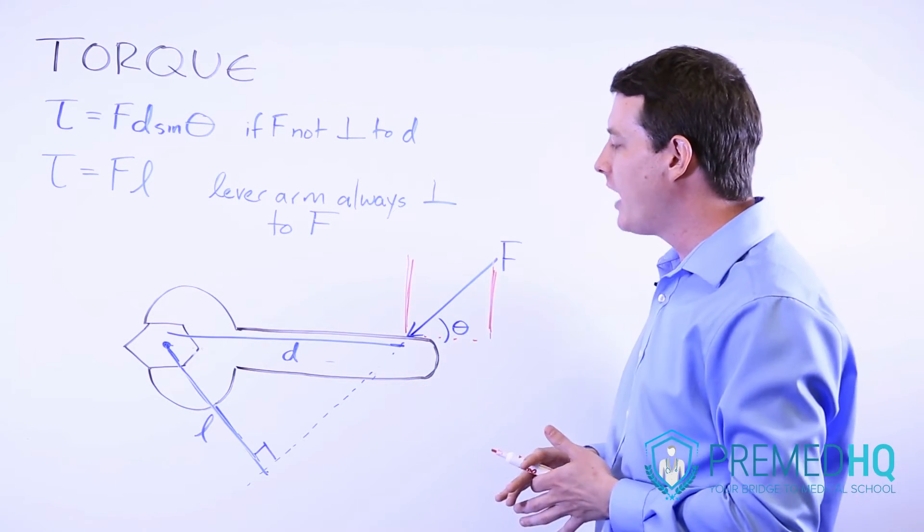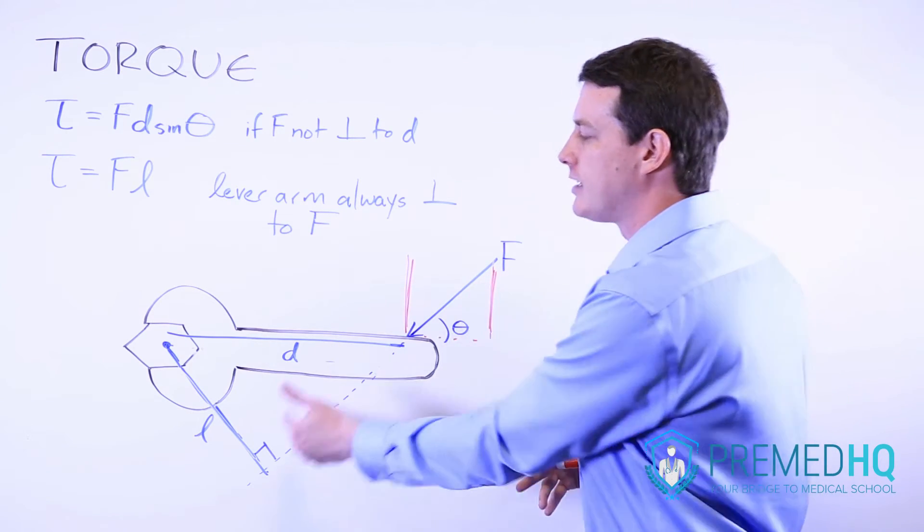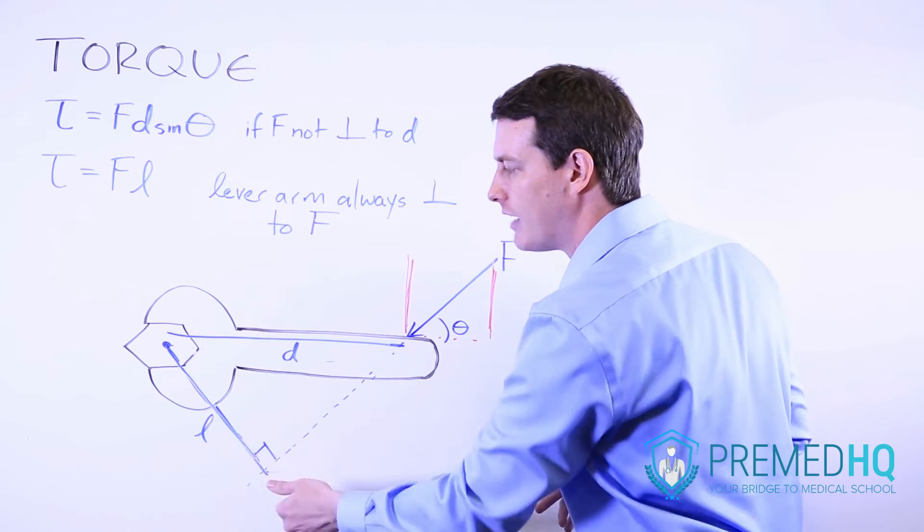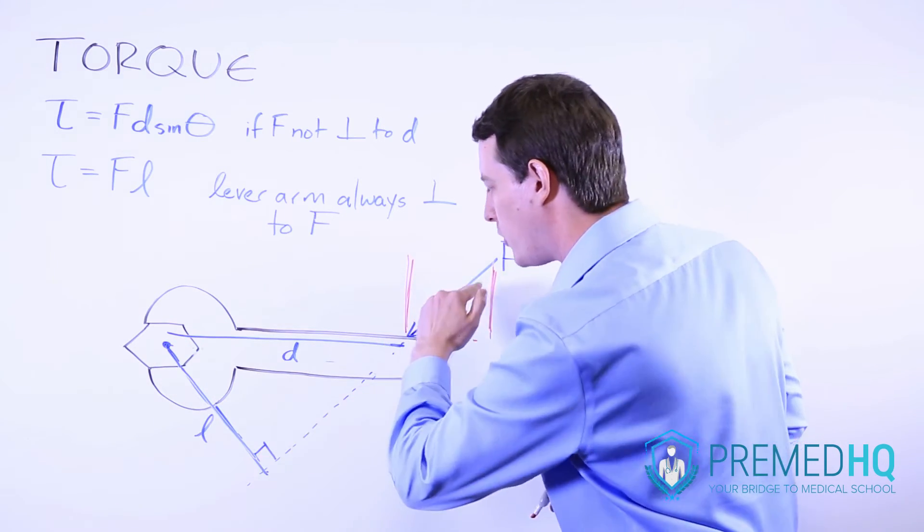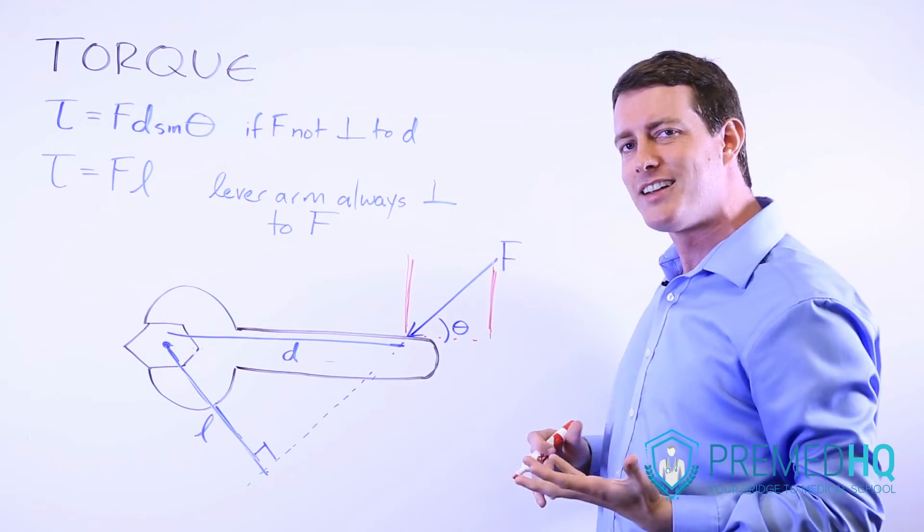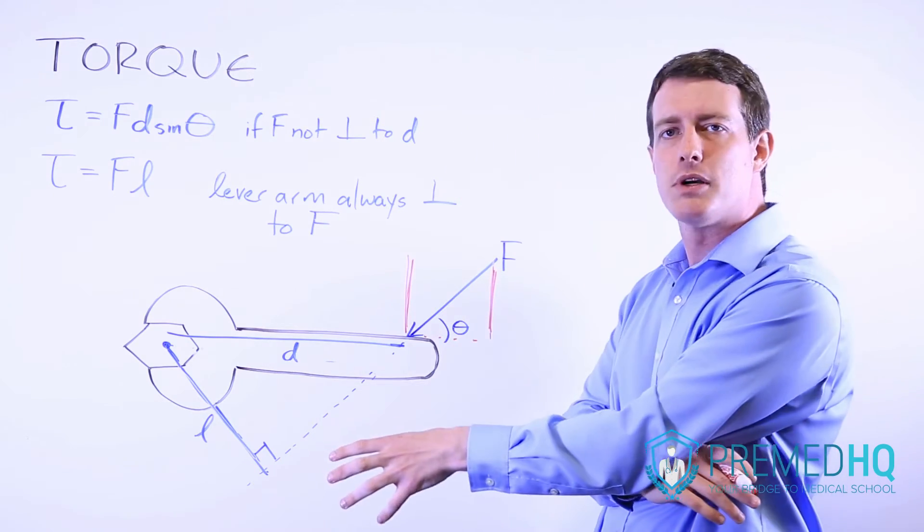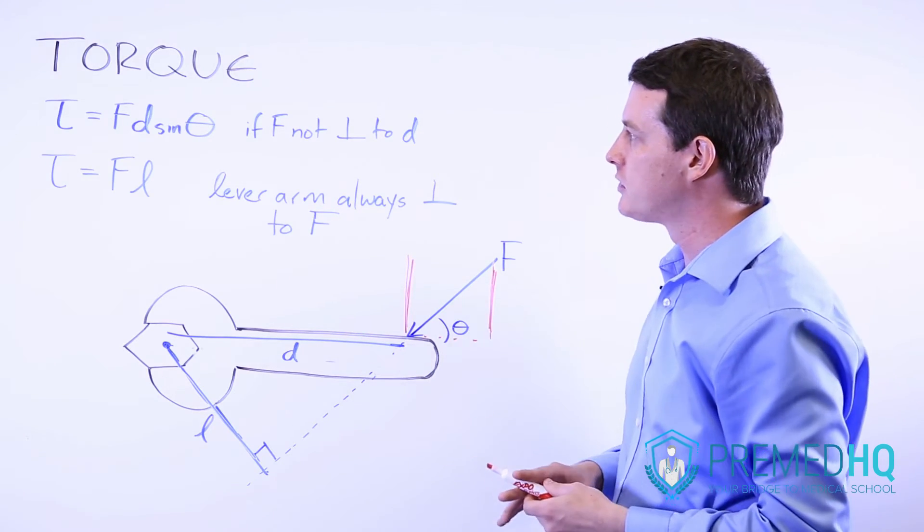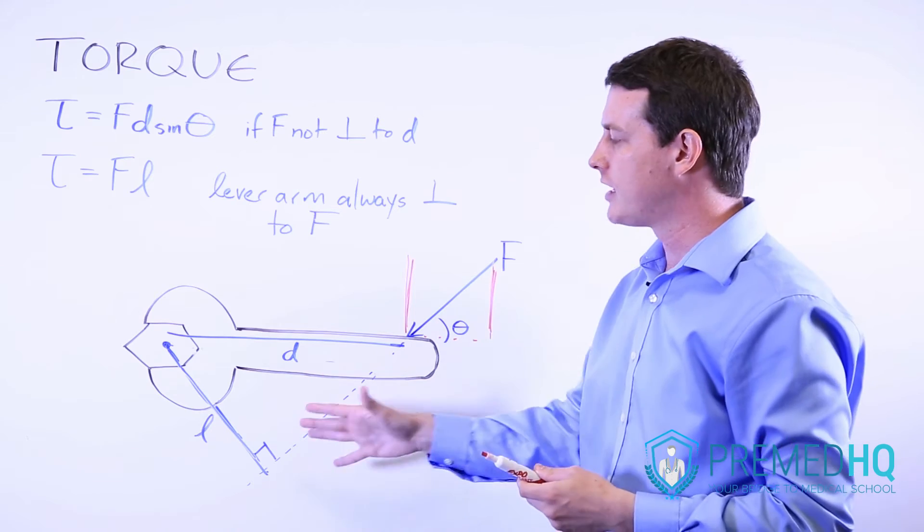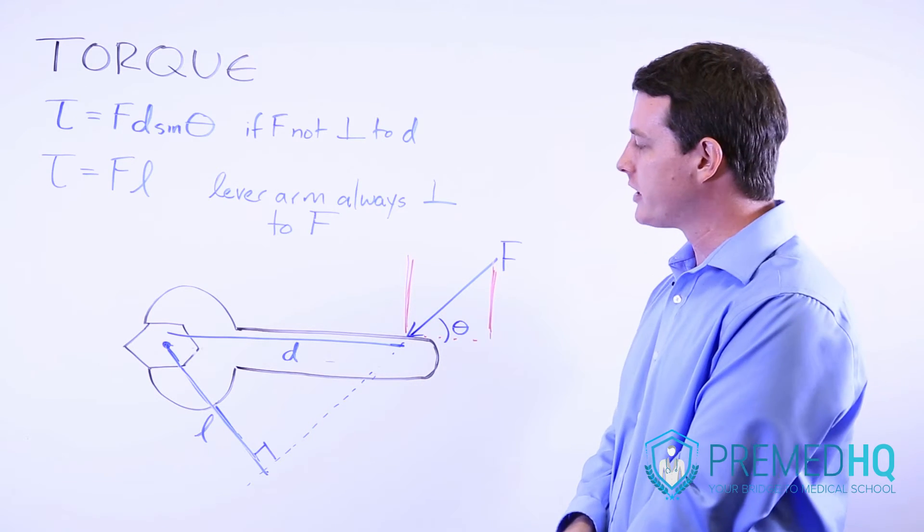If you do it that way then it's the force times the lever arm, as long as the lever arm, which is the distance from the central point of rotation to the point where the force vector intersects, as long as those are perpendicular, then you don't need to use sin θ. You can simply use torque equals force times lever arm.